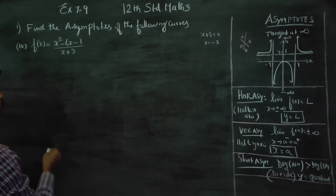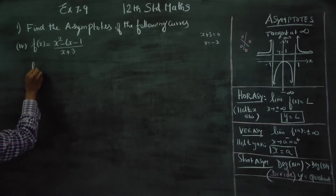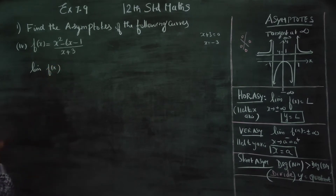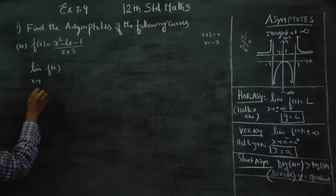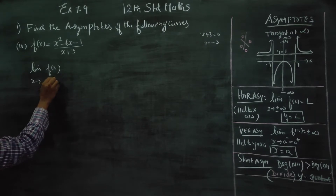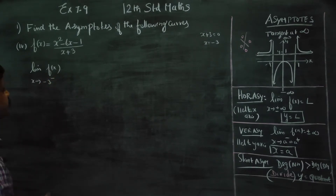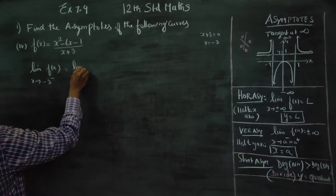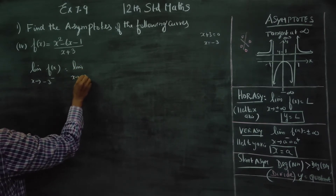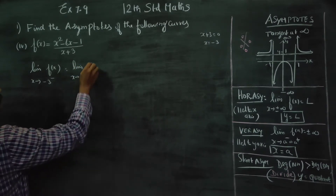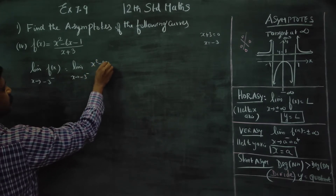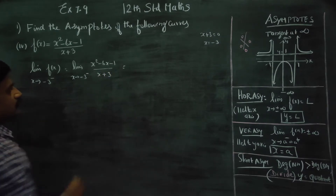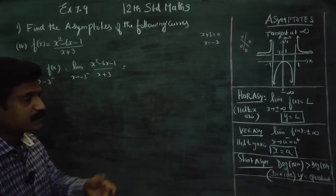First of all, I am going to take the limit of f(x) as x tends to minus 3. For the left-hand limit, as x tends to minus 3 from the left, we evaluate x squared minus 6x minus 1 divided by x plus 3. If x is equal to minus 3, the denominator becomes 0.